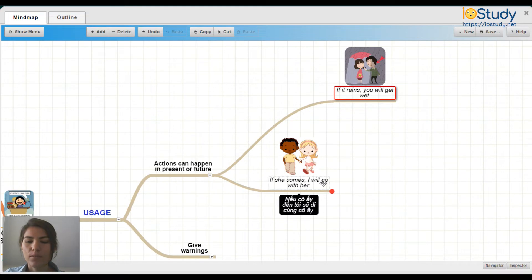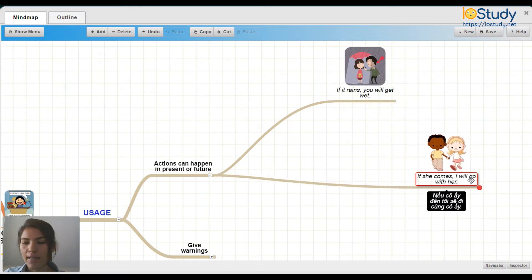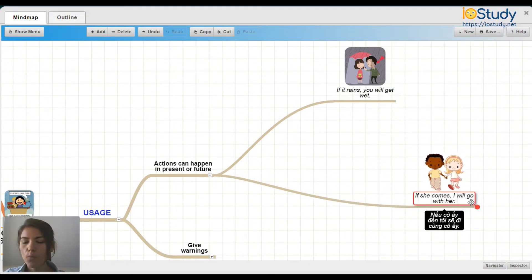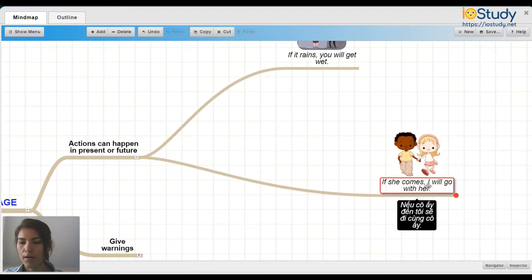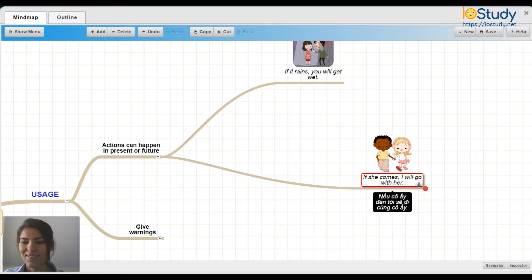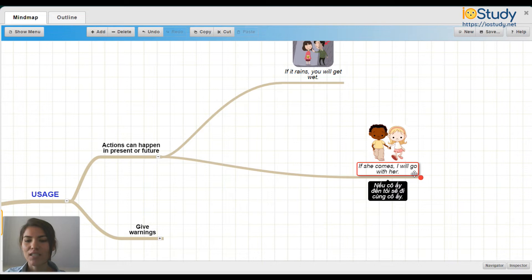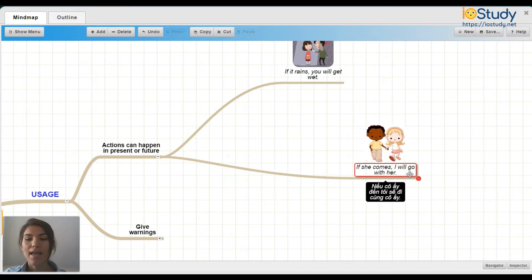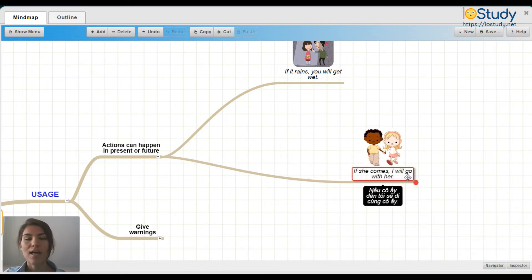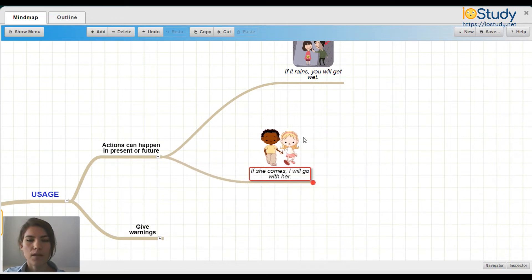Okay, next example. If she comes, I will go with her. Same as the last one. We're talking about something in the present that's happening, and as a result, this will happen in the future.